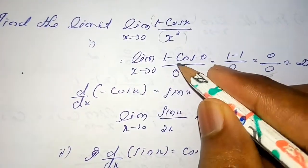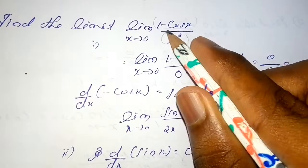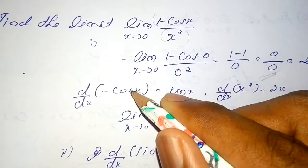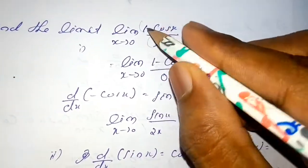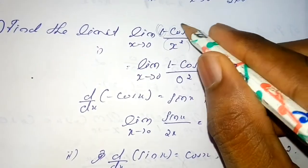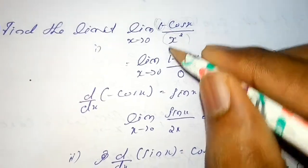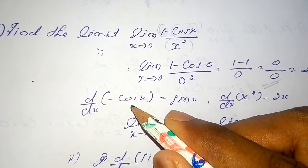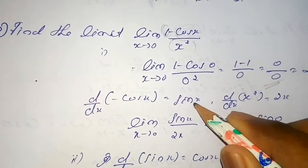First we have to find the derivative of f(x). d/dx of (1 - cos x): the derivative of the constant 1 is zero, so we find the derivative of -cos x, which is positive sin x.